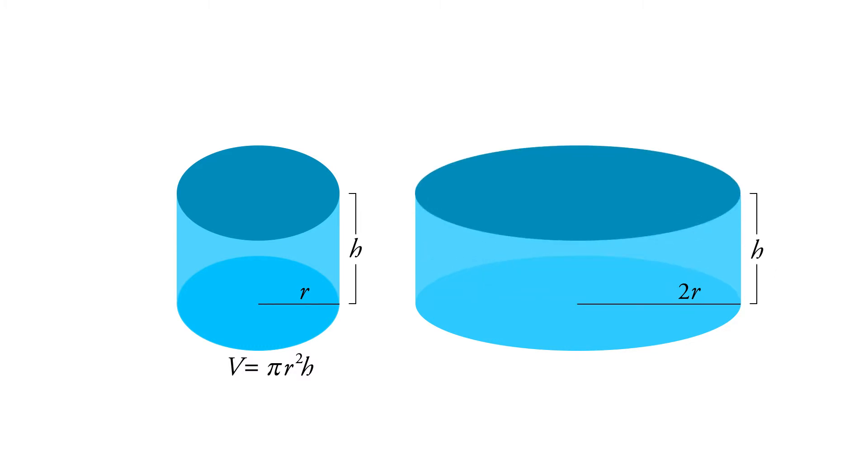So the volume of the can, the volume of the cylinder, is V equals pi r squared h. And again, you see that the pi r squared is the area of the base and then h is just the height.